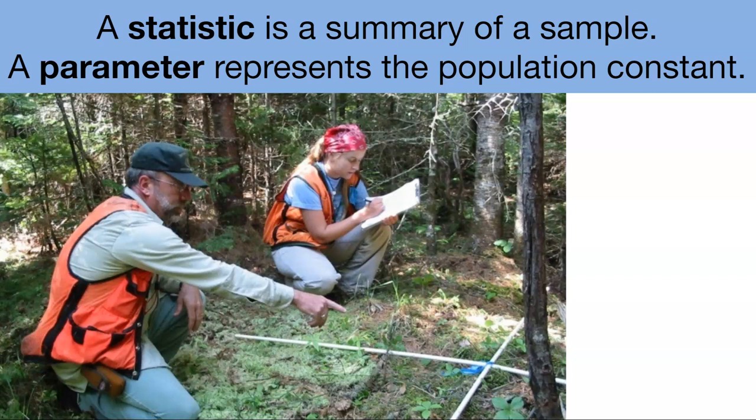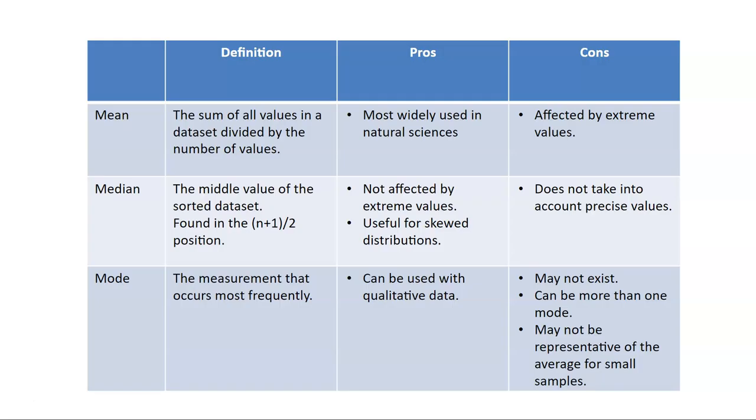The parameter, on the other hand, represents all the vegetation across a forest in this case. And so we use statistics as representations of summaries of samples, whereas parameters represent the population mean.